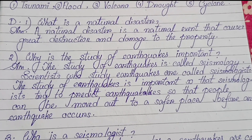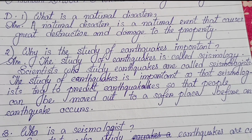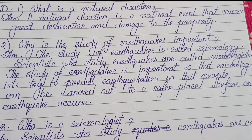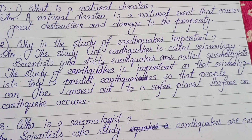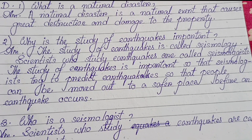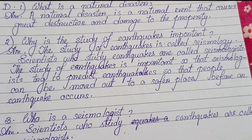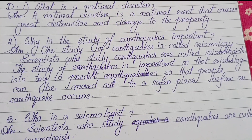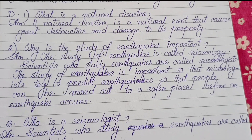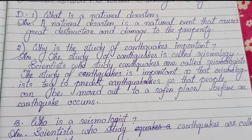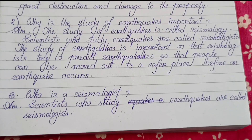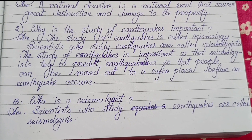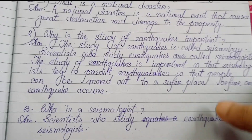The study of earthquakes is called seismology. Scientists who study earthquakes are called seismologists. The study of earthquakes is important so that seismologists can try to predict earthquakes, so that people can be moved to a safer place before an earthquake occurs. Number three: Who is a seismologist? Scientists who study earthquakes are called seismologists.